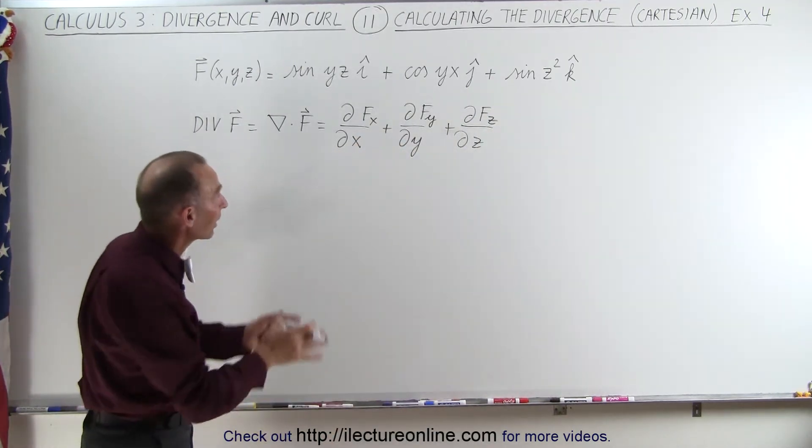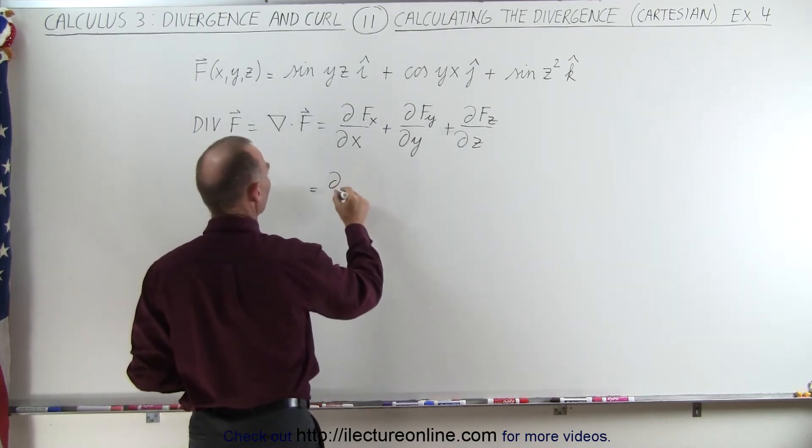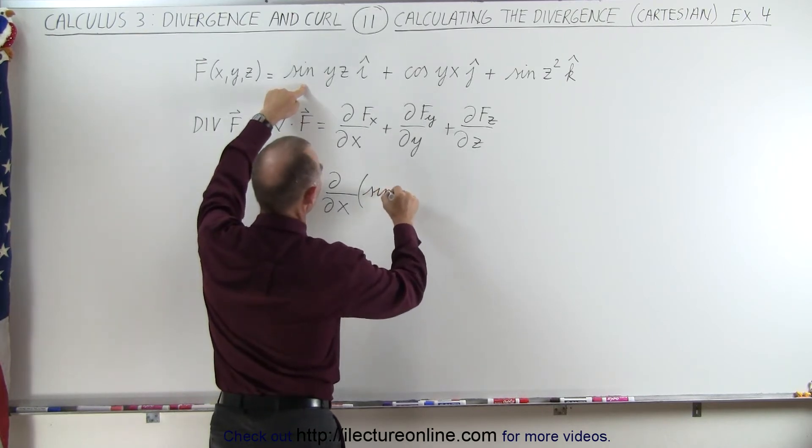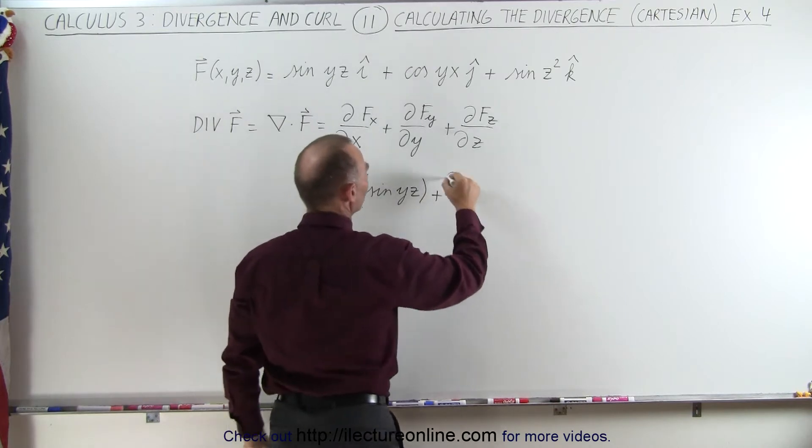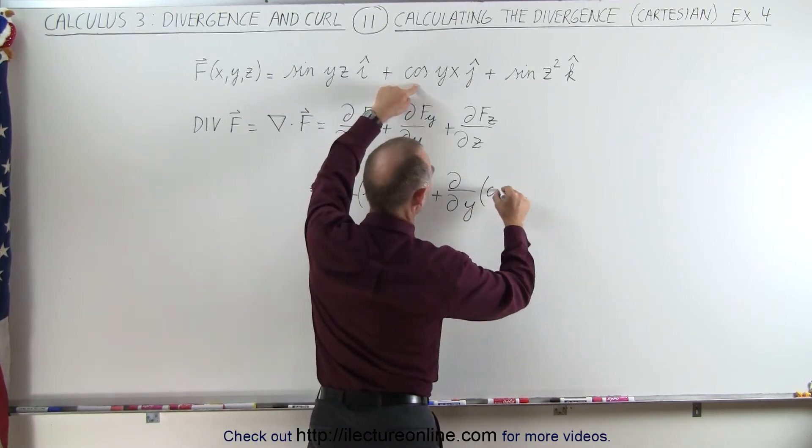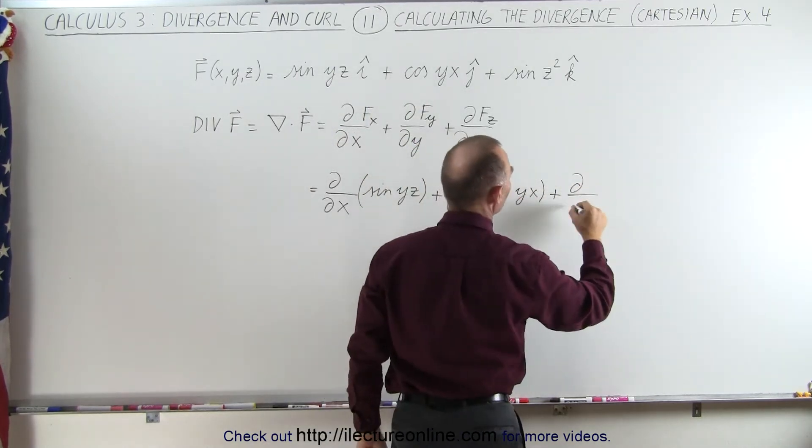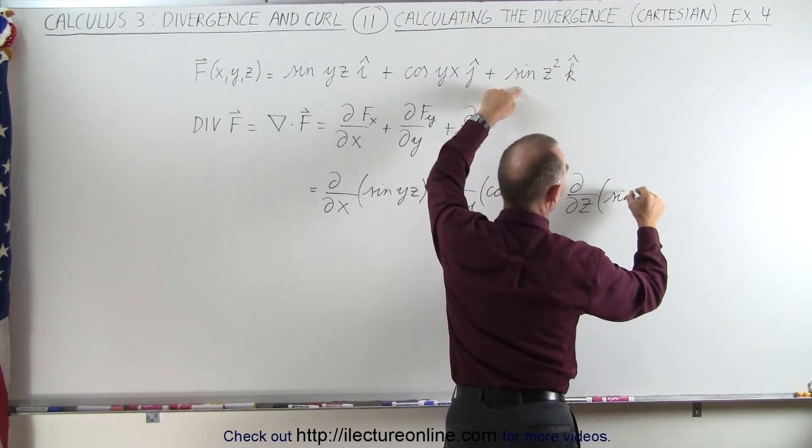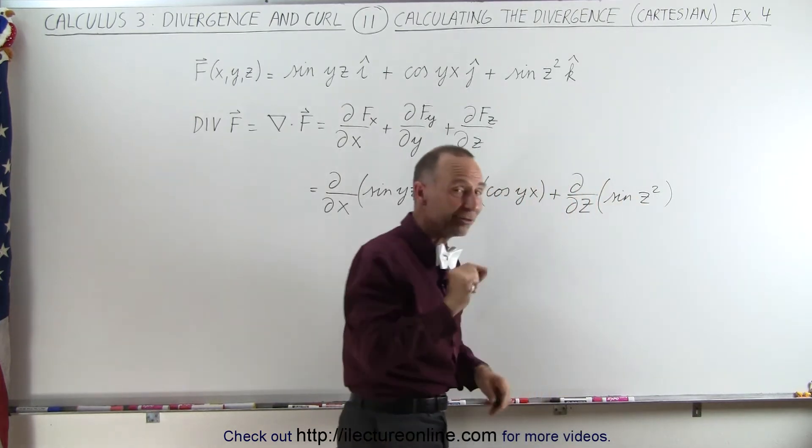All we have to do now is plug in what those are. This becomes the partial derivative with respect to x of the x component, which is sine of yz, plus the partial derivative with respect to y of the y component, which is cosine of yx, plus the partial derivative with respect to z of the z component, which is sine of z squared. It's not sine squared of z, it's sine of z squared.